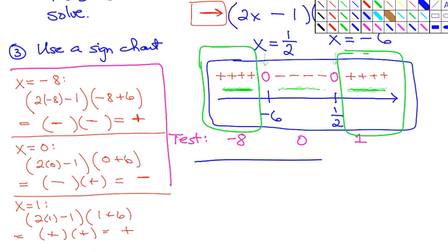So the solution is negative infinity to -6 union 1/2 to infinity.